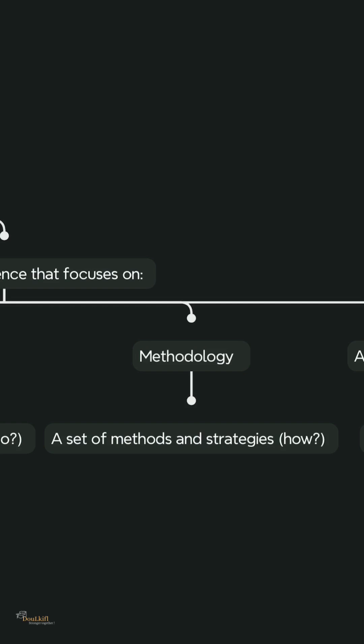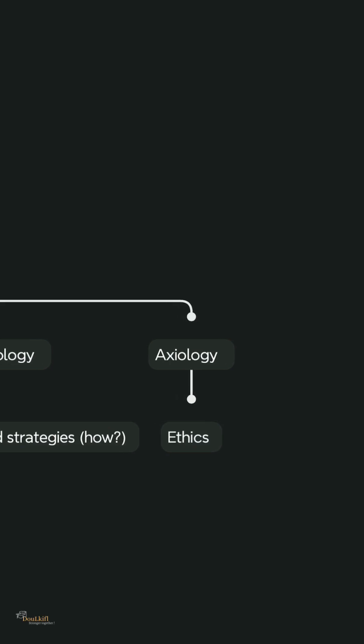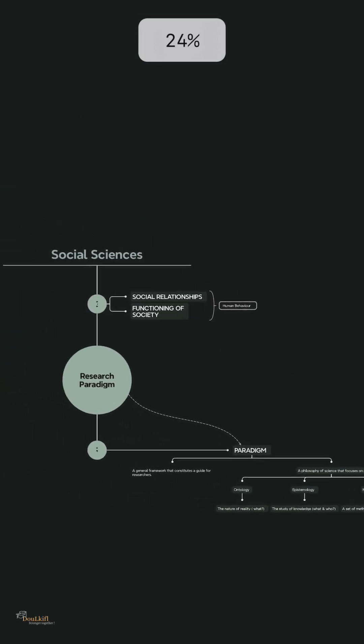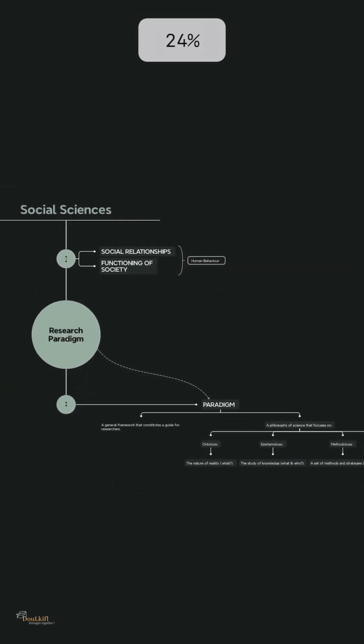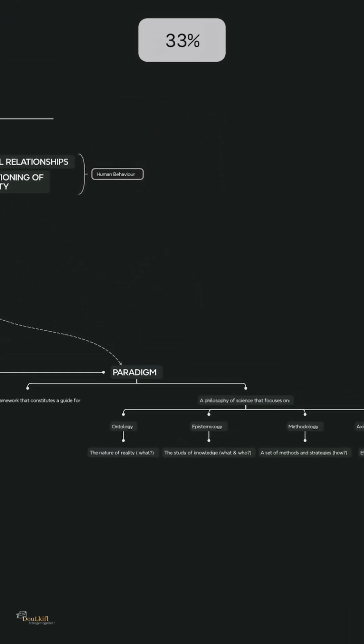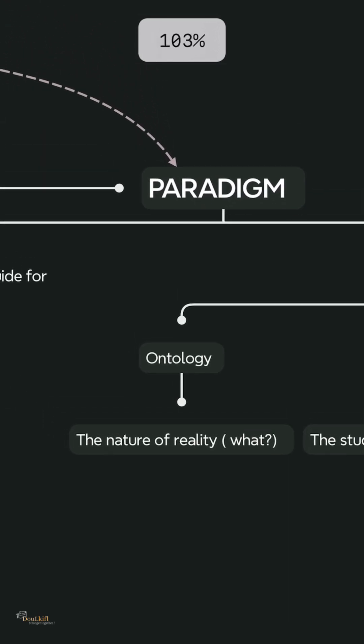And then we have axiology. The paradigm is a general framework, a guide for the researcher. It's the philosophy of science. The first thing is ontology - the question is what. The nature of reality, the form of social reality, the nature of the phenomenon that has to be studied.